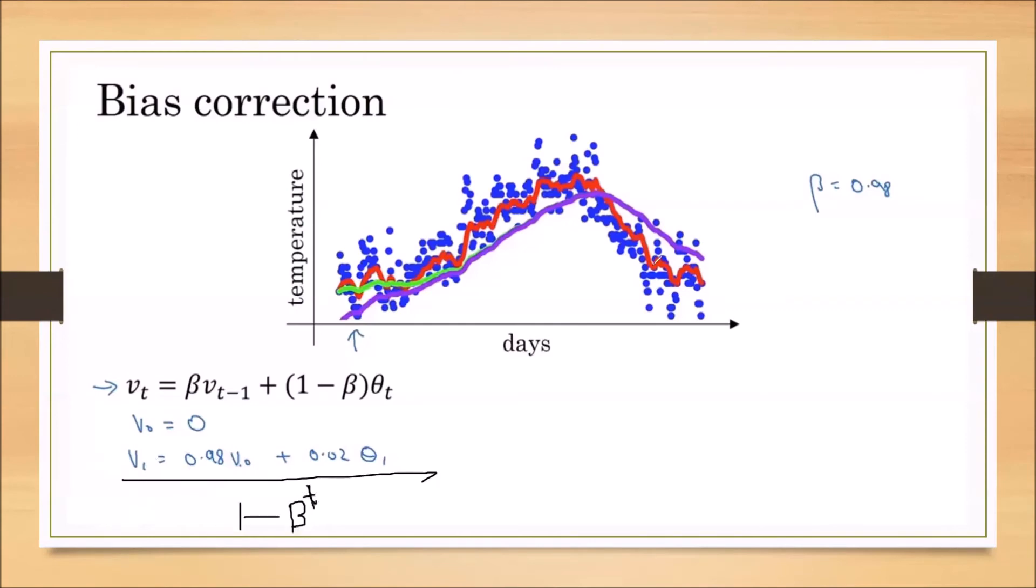So if we divide, example we have calculated our problem is V₁ is equal to zero plus 0.02 θ₁. Now according to our concept, we have to divide this V₁ with 1 minus β power t. Now t is 1 because only for one day. What is V₁ by 1 minus β? 1 minus β means 0.98, so we should divide the V₁ by 0.02 to get the correct value.